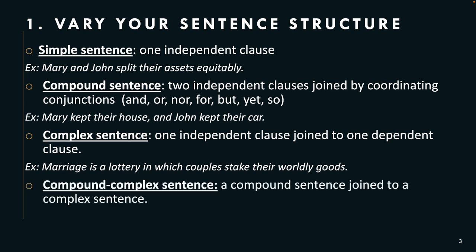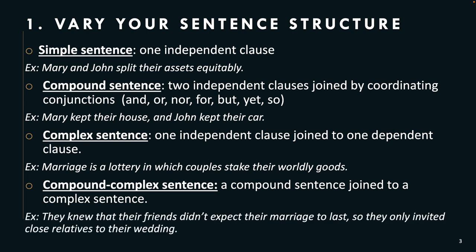The next type of sentence is a compound-complex sentence, which is a compound sentence joined to a complex sentence. For example: 'They knew that their friends didn't expect their marriage to last, so they only invited close relatives to their wedding.' Here, 'so' joins two sentences as a coordinating conjunction. 'They knew' is an independent clause; 'that their friends didn't expect their marriage to last' is a dependent clause.